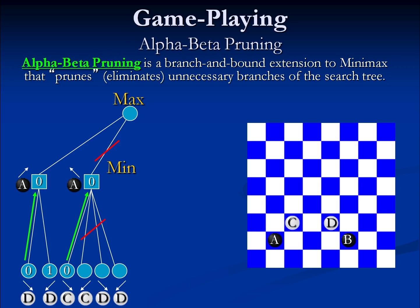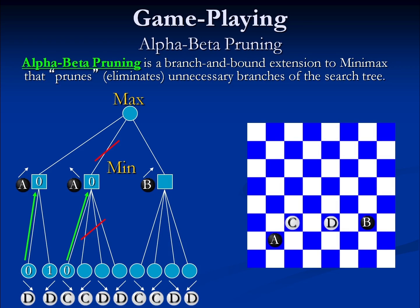Continuing on, another option is for max to move B up and to the right. If we move B up and to the right, then min has four possible options. If min chooses to move C down and to the right, that will again result in an evaluation of 0, which makes this branch less than or equal to 0, meaning it is not worth spending time to explore this branch either.